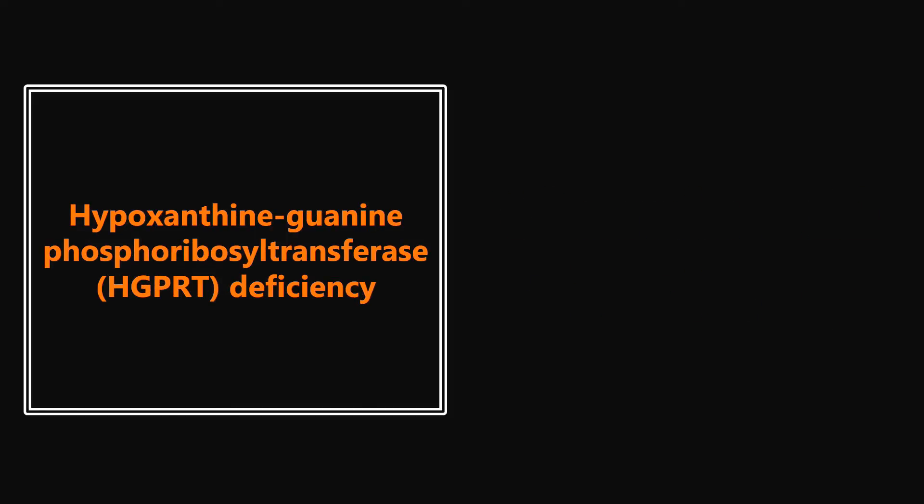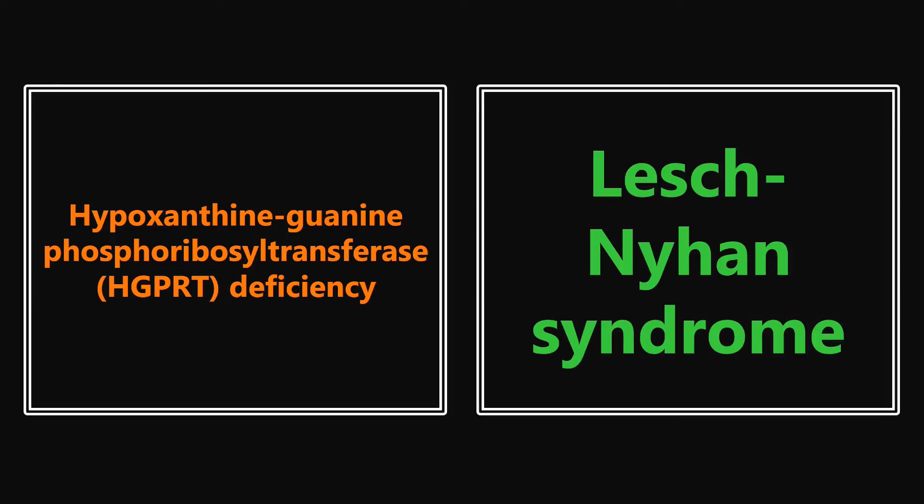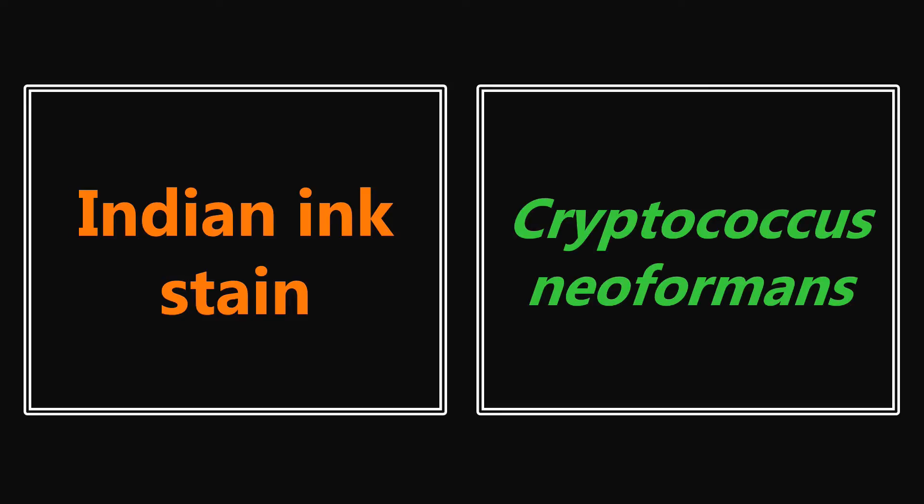Hypoxanthine-guanine-phosphoribosyl-transferase (HGPRT) deficiency — if you see that in a question, they're most likely talking about a patient with Lesch-Nyhan syndrome. It's a big enzyme deficiency and it's in reference to Lesch-Nyhan syndrome. Indian ink stain — really the only time you're going to see this is if they're referencing Cryptococcus neoformans. Definitely look this one up and memorize what it looks like on histology, because it's pretty distinct; once you see it on the test, you'll know it's Cryptococcus immediately.